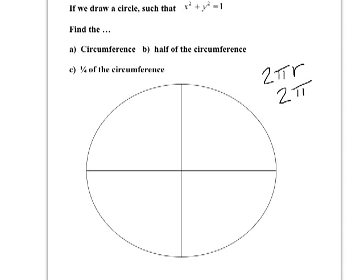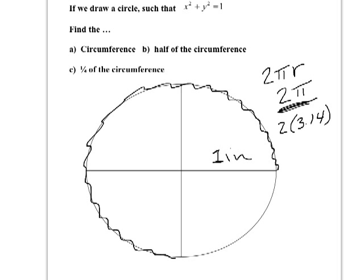Let's make sure we understand that. If my radius is 1 inch, then the circumference is 2π inches all the way around. Since π is approximately 3.14, that means if we took a string and measured all the way around, the measurement would be 6.28 inches long.